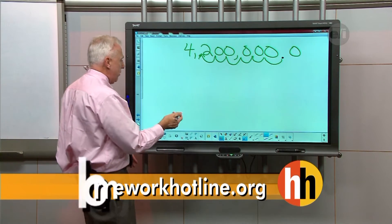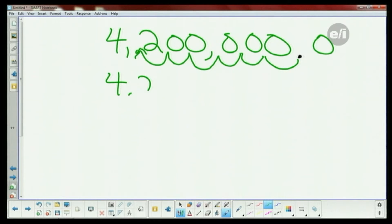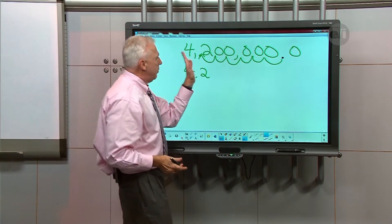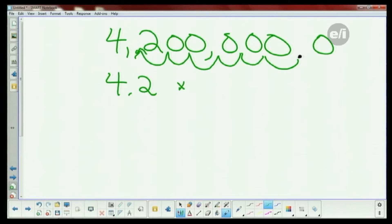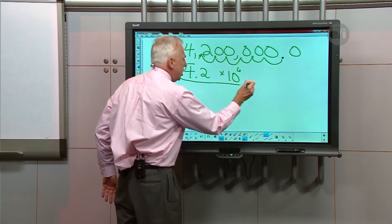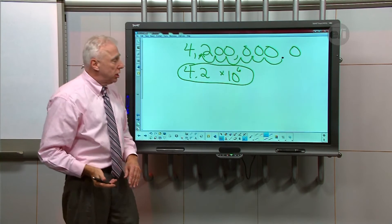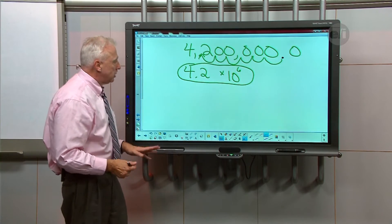So the way we would write this in scientific notation would be 4.2. Again, those are significant digits when we set this up. In the original problem, all those zeros are significant, but we're going to show it like this. And we went over how many spots? 6. So times 10 to the sixth power. So in scientific notation, save us a little time, a little space. A lot of computer technology also shows their values in scientific notation because of the binary code.